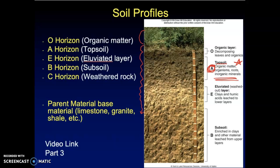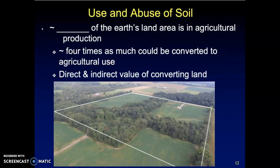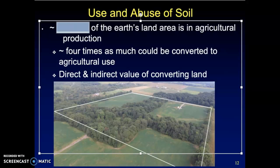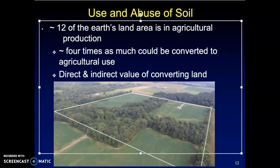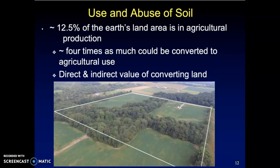What we want to start discussing now is the use and unfortunately the abuse of soil. Roughly 12.5% of the earth's land area is in agricultural production — some type of agriculture: corn, beans, wheat, alfalfa, hay, rice, apples, peaches, etc. It's estimated that four times as much land could actually be converted to agricultural use.